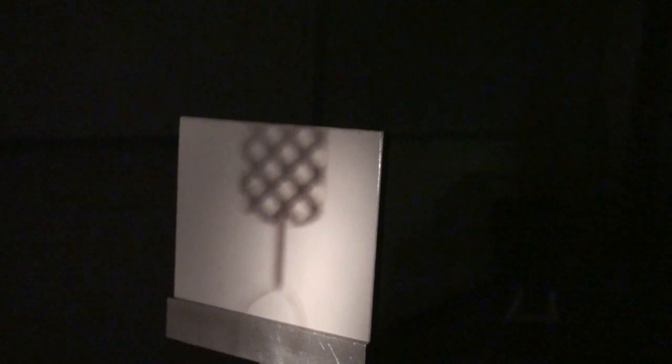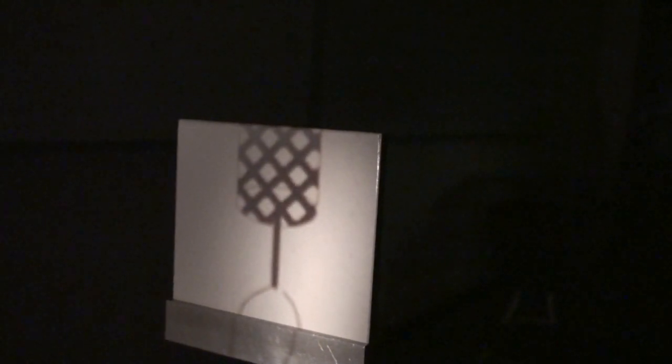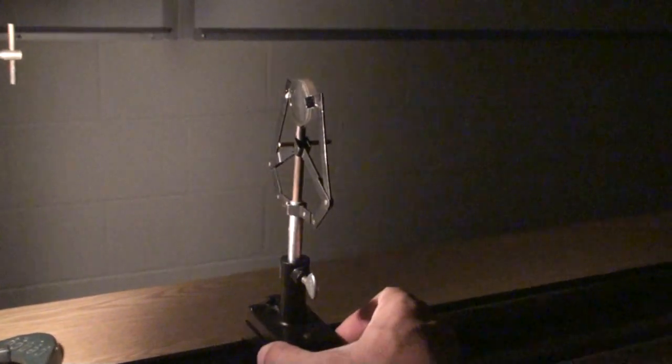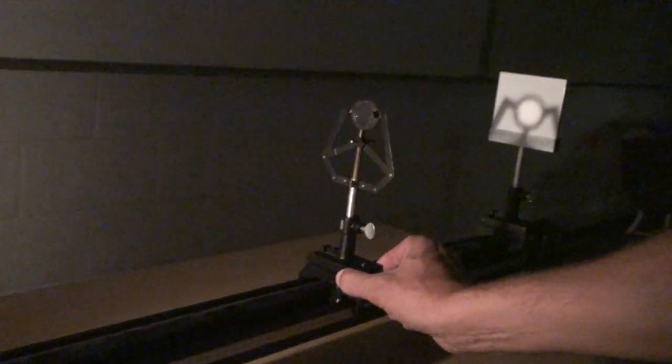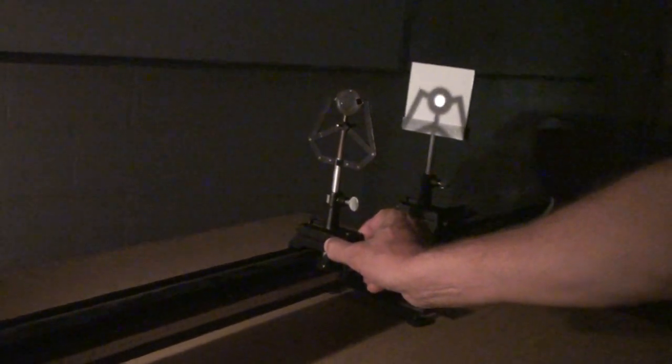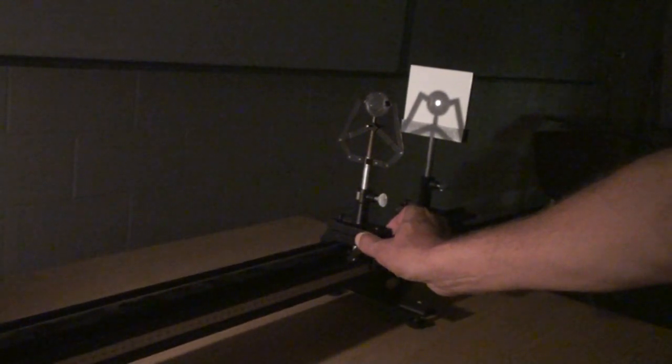Place the object distance of 50 cm. Move the lens until a sharp inverted image forms. Record the object position, the lens position, and the screen position. Now keeping the object and screen fixed, move the lens much closer to the screen to form another image but smaller. Record this new lens position.